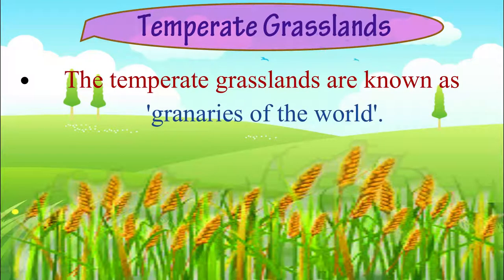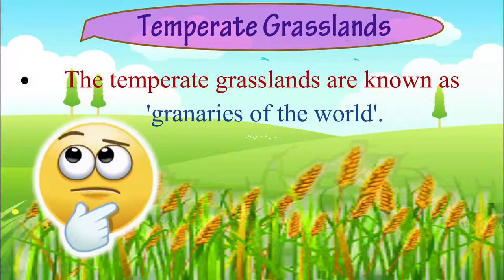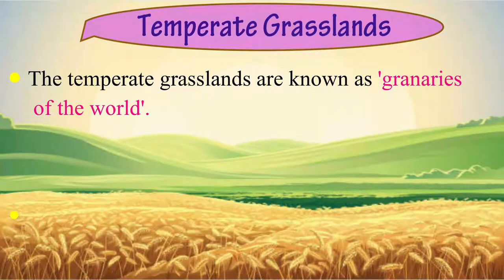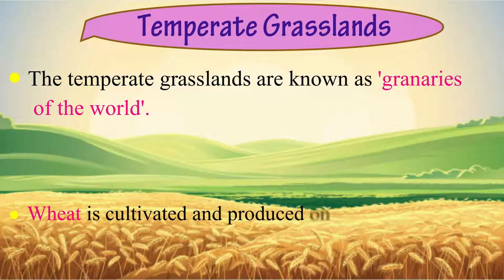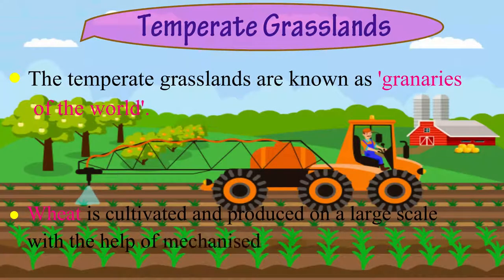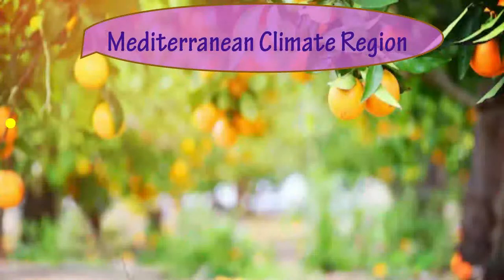The temperate grasslands are known as the granaries of the world, because in temperate grasslands, wheat is cultivated and produced on a large scale with the help of mechanized tools and modern machinery.